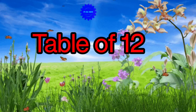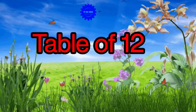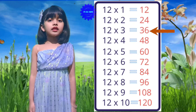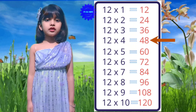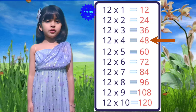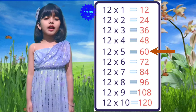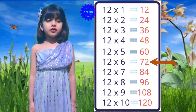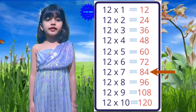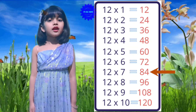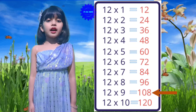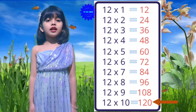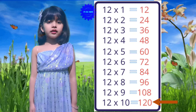Table of 12: 12 ones are 12, 12 twos are 24, 12 threes are 36, 12 fours are 48, 12 fives are 60, 12 sixes are 72, 12 sevens are 84, 12 eights are 96, 12 nines are 108, 12 tens are 120.